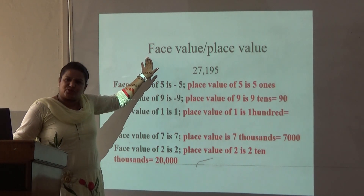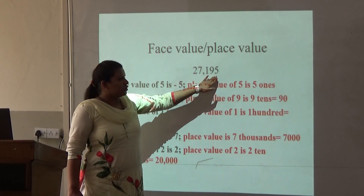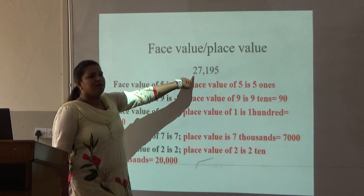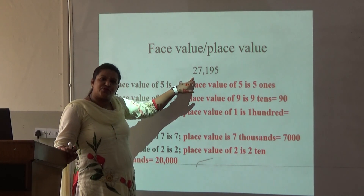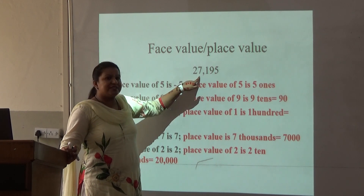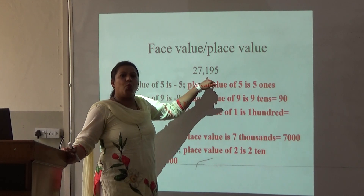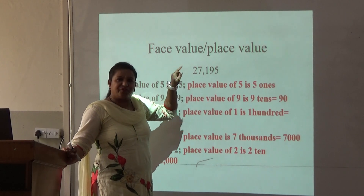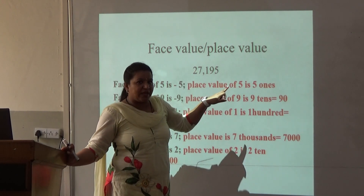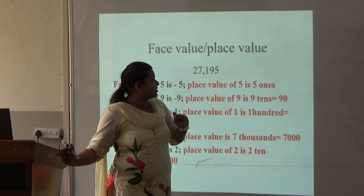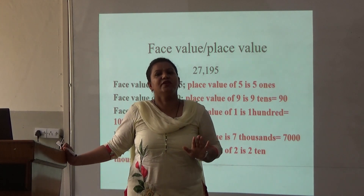Just a recap of place value and face value. This is 27,195. If I ask what is the place value of 2 here? It is at 10,000's place — 20,000. But what is the face value of 2? It is 2 only. 7 is at 1000's place. But what is the face value? 7. 1 is at 100's place, so 1 is the face value. For 9, 9 is the face value and 90 is the place value. 5 is at 1's place, so 5 ones is the place value and 5 is the face value.